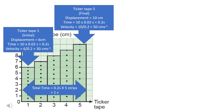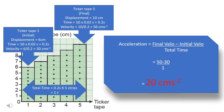The total time is 5 strips multiplied by 0.2 seconds, which is 1 second. Finally, we can calculate the acceleration. Acceleration equals final velocity minus initial velocity divided by total time. So, 50 minus 30, divided by 1. The acceleration is 20 cm per second per second.